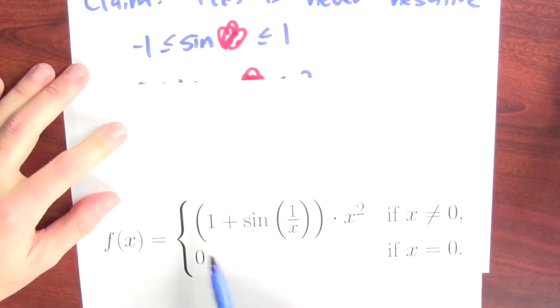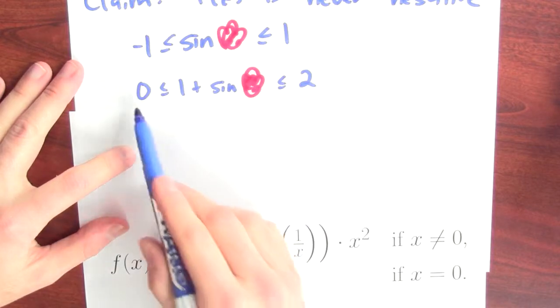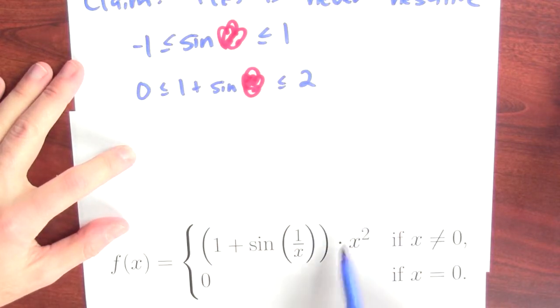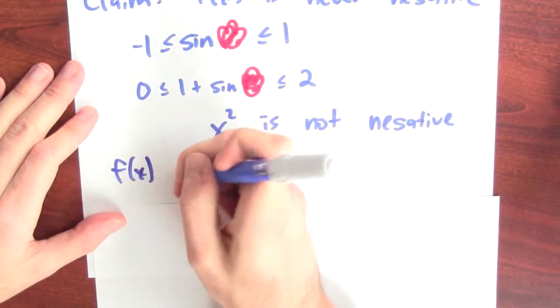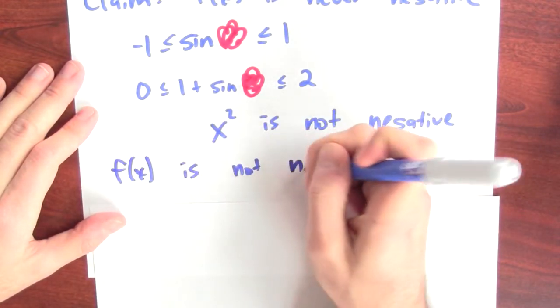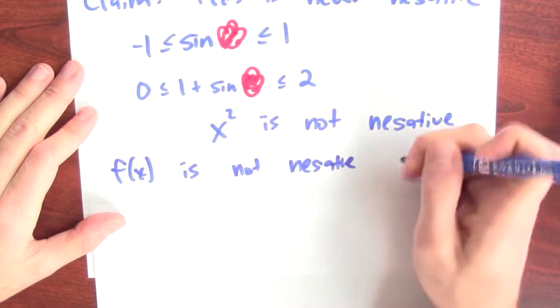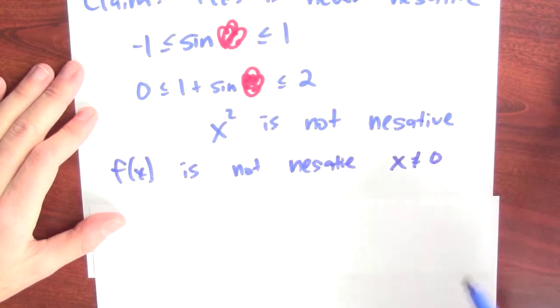Now, I'm multiplying 1 plus sine of 1 over x, this number which is trapped between 0 and 2, by x squared, which is never negative. And that means f of x is not negative as long as x isn't equal to 0.